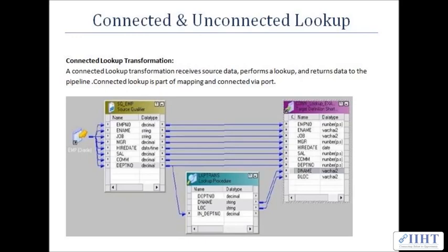What is a connected lookup transformation? A connected lookup transformation receives source data, performs a lookup, and returns data to the pipeline. Connected lookup is a part of mapping and is connected via port. As you can see in this figure, the source qualifier — one of the columns — goes into the lookup transformation, and then the target is populated from the source qualifier as well as the lookup transformation.